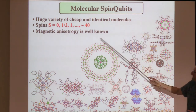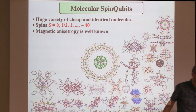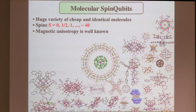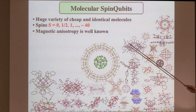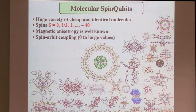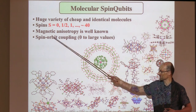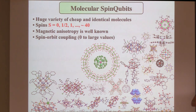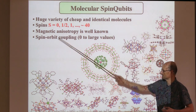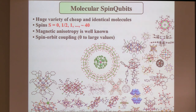Chemists can tune the magnetic anisotropy of these systems, meaning they can tune the energy spacings. So when you're a physicist who likes to have a nice Hilbert space where you control the energy levels, chemists can tune this via what we call magnetic anisotropy. You can do this via spin-orbit-like systems where spin-orbit coupling is large, or you can avoid it depending on what you want to focus on.